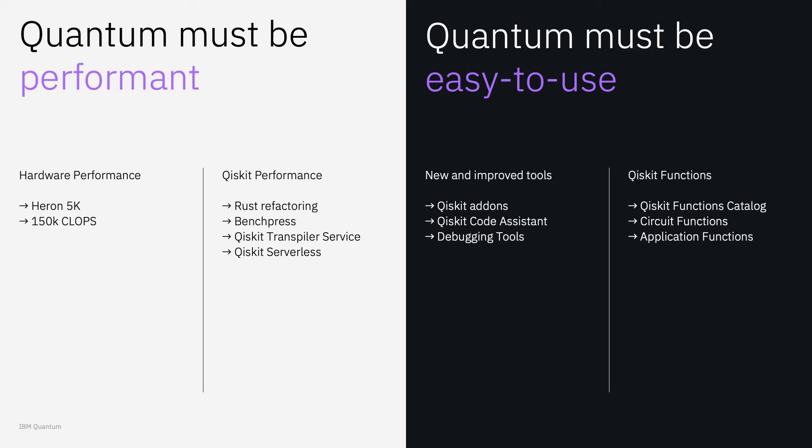Abhinav, Heather, and Jen have just showed you how we're improving the performance of our hardware and software to accelerate discovery. We showed Heron at 5k, 150,000 CLOPs for hardware performance, and improved Qiskit performance through Rust refactoring. We've done benchmarking with BenchPress, launched the Qiskit transpiler service in preview, and made updates to Qiskit Serverless. From the easy-to-use side, we've created add-ons, Qiskit Code Assist, and new debugging tools. The Qiskit functions catalog is ahead of schedule, and we're offering tools for scale, quality, and speed to enable algorithm discovery.